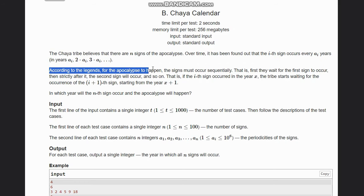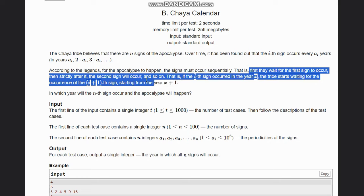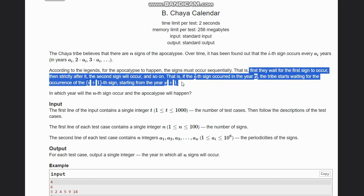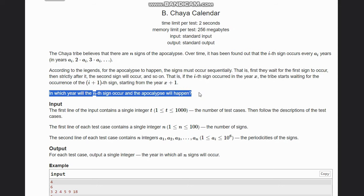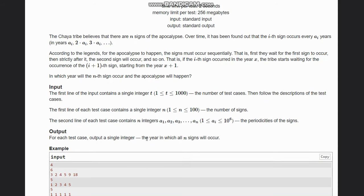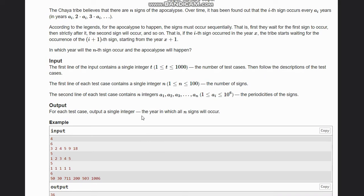According to the legends, for the apocalypse to happen the signs must occur sequentially. That is, first they wait for the first sign to occur, then strictly after that the second sign will occur, and so on. If the i-th sign occurred in year x, the tribe starts waiting for the occurrence of the (i+1)-th sign starting from year x+1. In which year will the n-th sign occur and the apocalypse will happen? So we have t, the number of test cases, n the number of signs, and a_1 to a_n the periodicities of the signs. For each test case we need to output the year in which all n signs will occur.